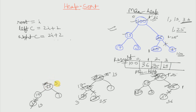We have three elements in consideration: 3, 17 and 1. Since 17 is the largest, 17 comes to the root and 3 gets replaced at 17's location. We move to 3 and see there is no left or right element, so max heapify stops.